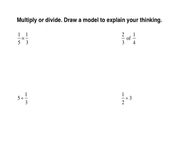In the first set of problems, it tells us to multiply or divide and draw a model to explain your thinking. I didn't do all the problems from my practice set, but I did a representative portion. Let's start with the first one: one-fifth times one-third. That's a fraction times a fraction. I'm going to create a rectangular area model and partition it into three equal parts using two vertical lines. I'll label that one-third and shade in my one-third.